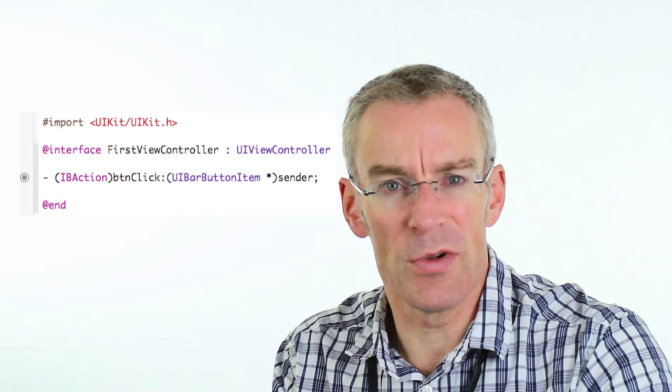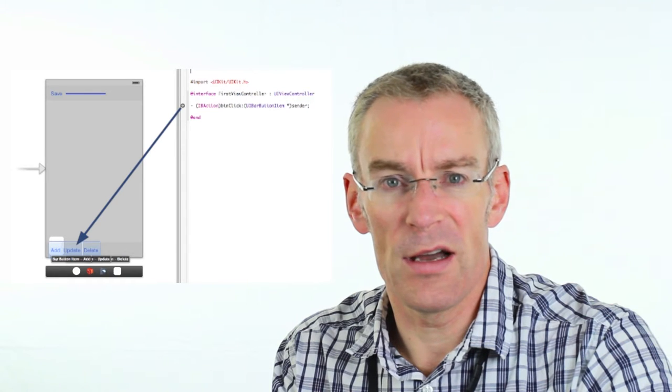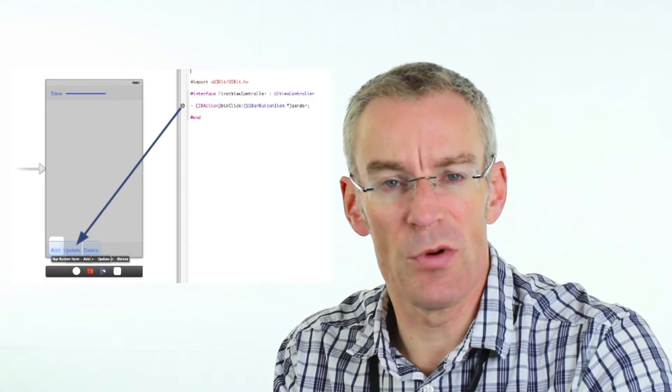It's much better to create a single IB action for the first button and then drag from the little circle back to each of the other buttons from the header file to assign the same action to multiple buttons. Once you've done that you need to know which button is being clicked. The IB action creates a sender and the sender has a title property, which contains the NS string of the label on the button. We can use this information to decide which button is being clicked.